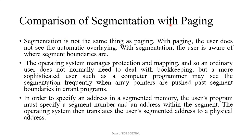This is the comparison of segmentation with paging. Segmentation is not the same thing as paging. With paging, the user does not see the automatic overlaying. With segmentation, the user is aware of where segment boundaries are. The operating system manages protection and mapping, so an ordinary user does not normally need to deal with bookkeeping, but a more sophisticated user such as a computer programmer will see segmentation frequently when array pointers push past segment boundaries in errant programs. To specify an address in a segmented memory, the program must specify a segment number and an address within the segment, and the operating system translates this to a physical address.